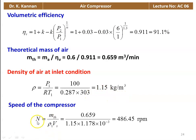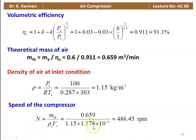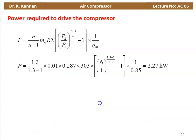The speed of the compressor: N equal to the theoretical mass of air divided by rho1 into Vs. Stroke volume has already been calculated. So 0.659 divided by 1.15 into 1.178 times 10 to the power minus 3 equals 486.45 rpm. That is the speed of the compressor.